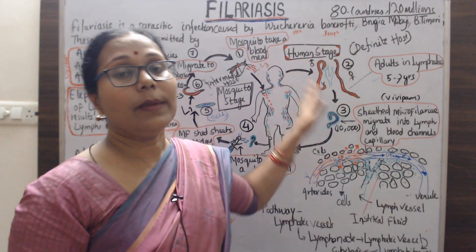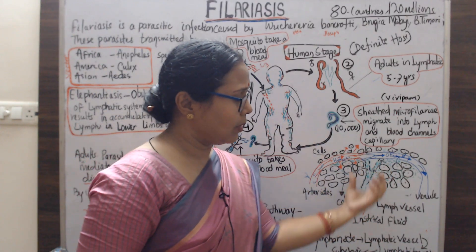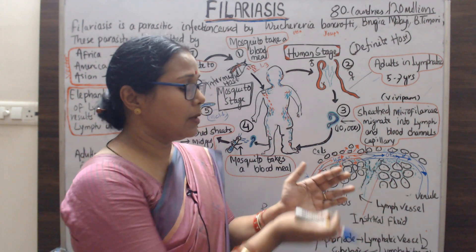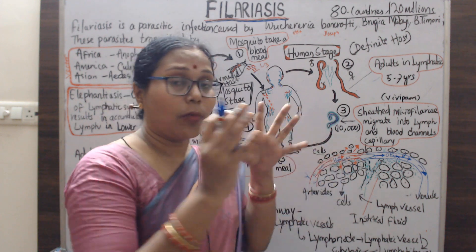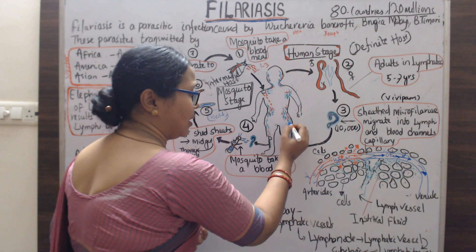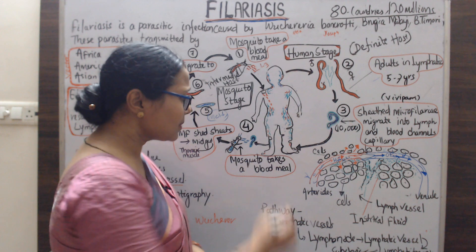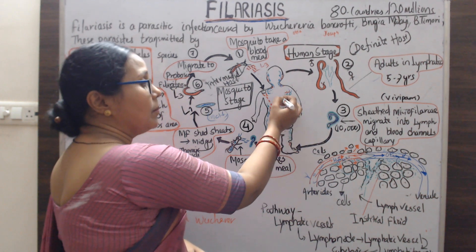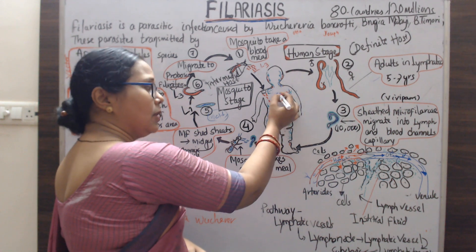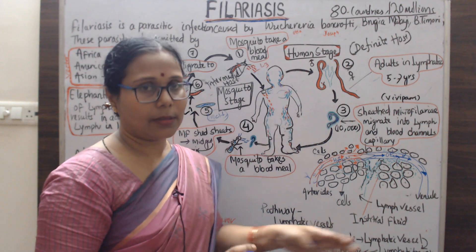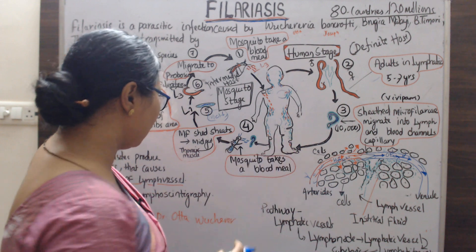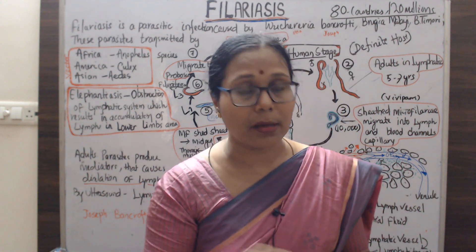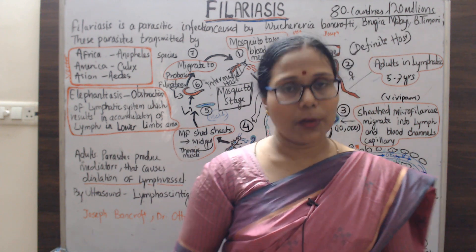The parasite affects the lymphatic system, causing dysfunction and dilation of lymphatic vessels, leading to swelling. The groin region and lower limbs are most commonly affected. In males, hydrocele may occur. In females, the axillary lymph nodes may be affected, leading to involvement of the breast region. These are the clinical features of filariasis. The next class will discuss control measures. Thank you for watching — please subscribe.